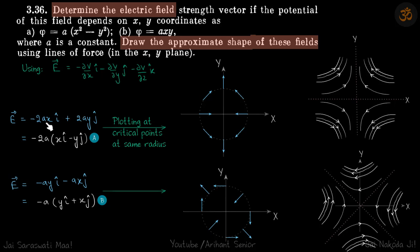So we use this operator and find the values of field in both cases. Now we need to plot this in the x-y plane, how they look like. How we do this is we plot it at critical points first. So these are the critical points.